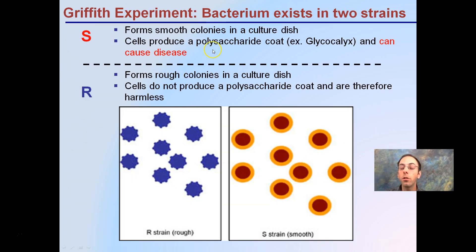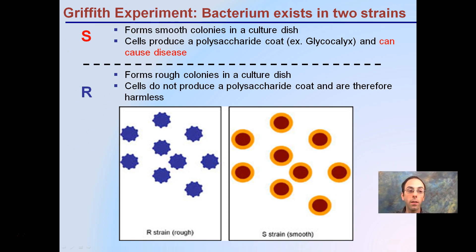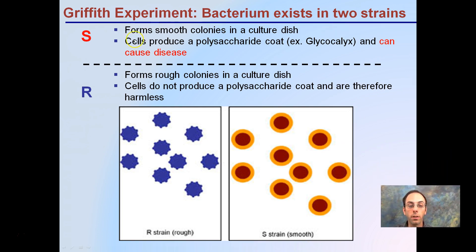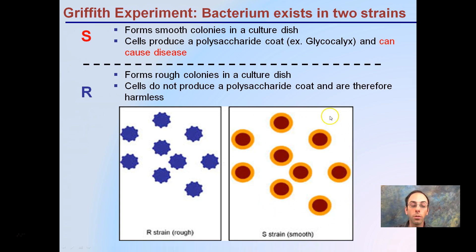In the Griffith experiment, a bacterium exists in two strains — he studied the S strain and the R strain. The S strain is smooth, and the key part is it can cause disease and death in animals.